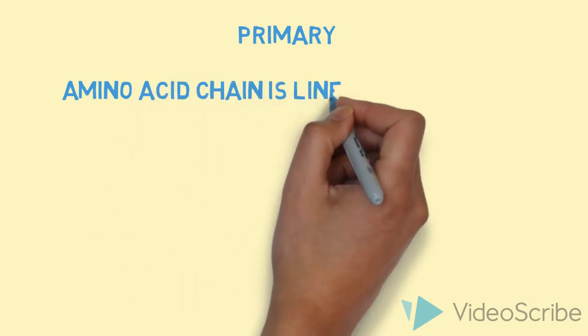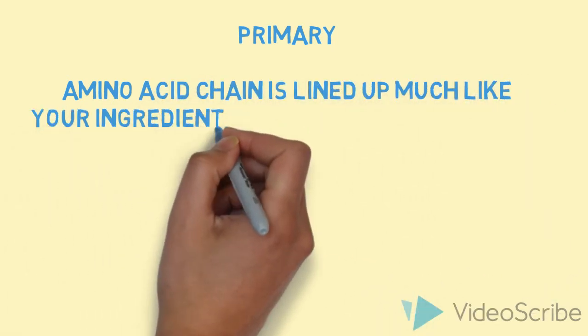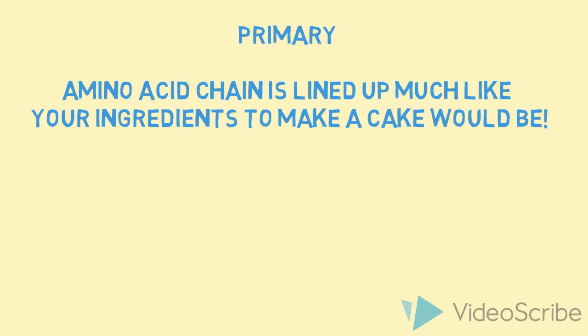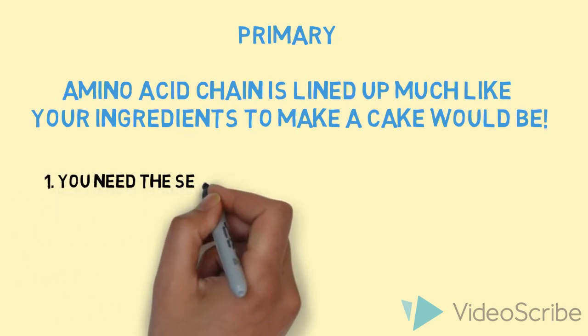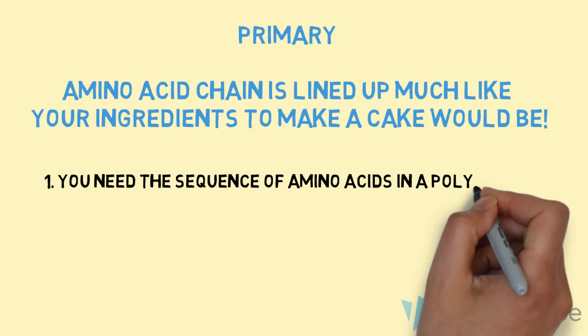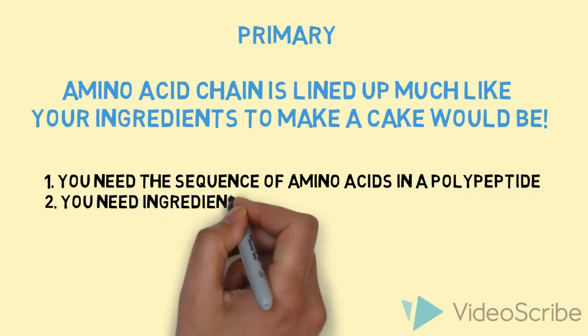Cake is a very easy way to remember the steps. For example, primary: the amino acid chain is lined up much like your ingredients to make a cake would be. You need the sequence of amino acids in a polypeptide, just as much as you need the ingredients to make a cake.